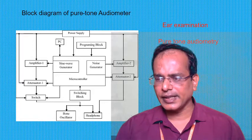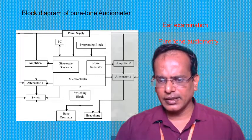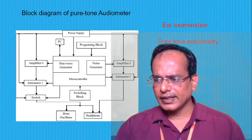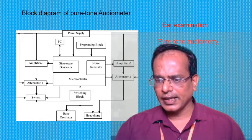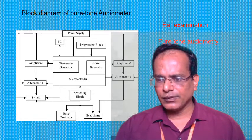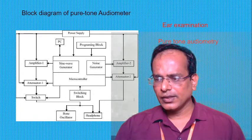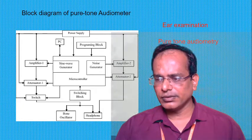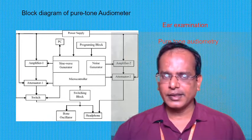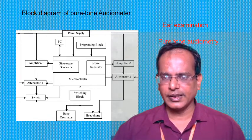HL (hearing level) is not equivalent to Sound Pressure Level (SPL). The American National Standards Institute (ANSI) has defined the relation between SPL and HL for each audiometric frequency. The standard audiometric frequency range is 250 to 8000 Hz.